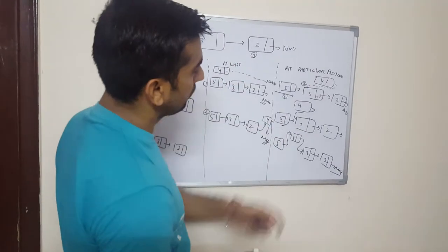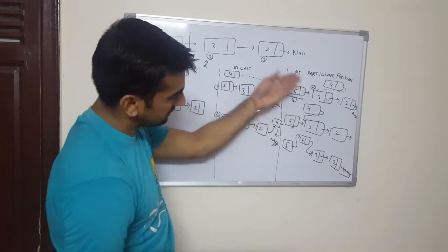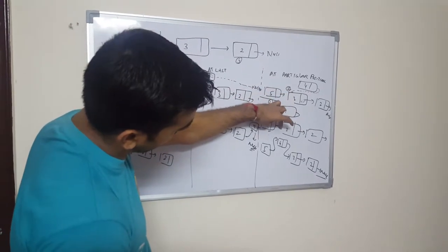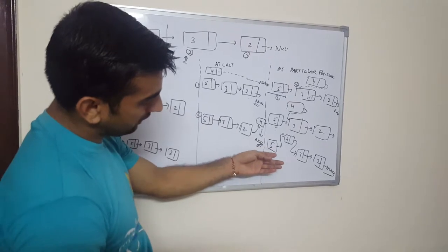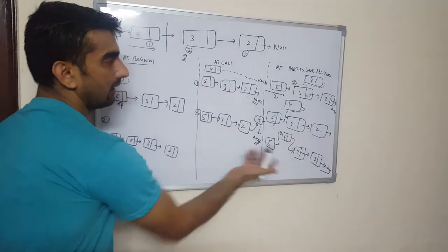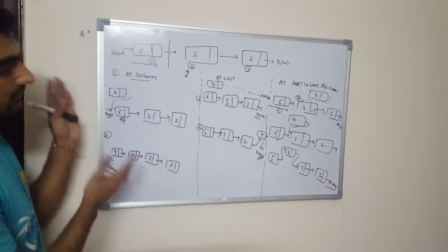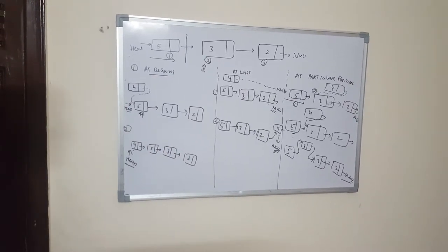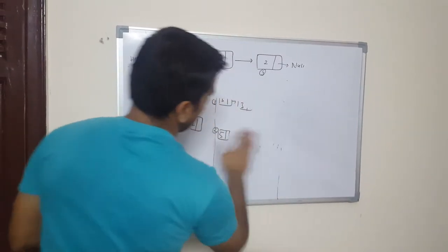So to add at a particular position: first we traverse and stop one index before the target position, then the next pointer of the new node points to the node at that position, and in the third operation the next pointer of the previous node points to the newly added node. These are the three different cases — at the beginning, at the last, and at a particular position. Now we are going to write the algorithm part.